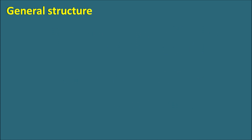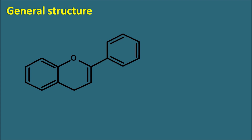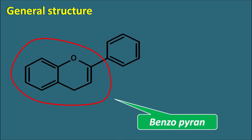First of all let us see the general structure of the flavonoids. We can observe one heterocyclic ring system called benzopyran. Benzopyran is an oxygen-containing ring system where benzene is fused with the pyran.